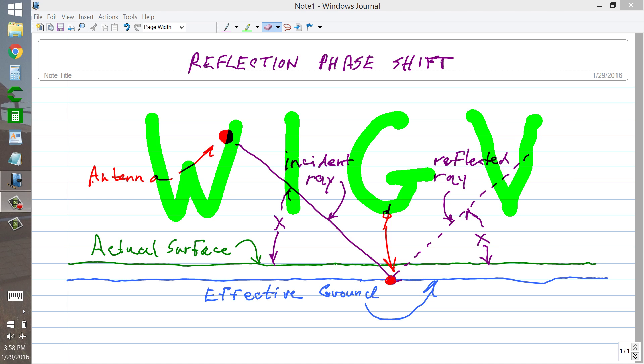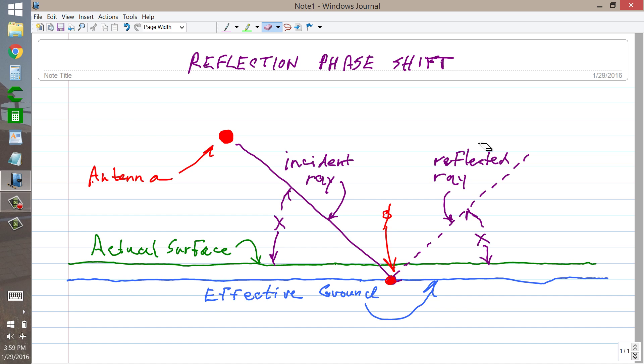Stan Jibalisco here, proprietor and operator of amateur radio station W1GV, Whiskey 1 Good Vibrations, here to tell you about the phase shift that occurs when the radiation from an antenna encounters the effective ground.